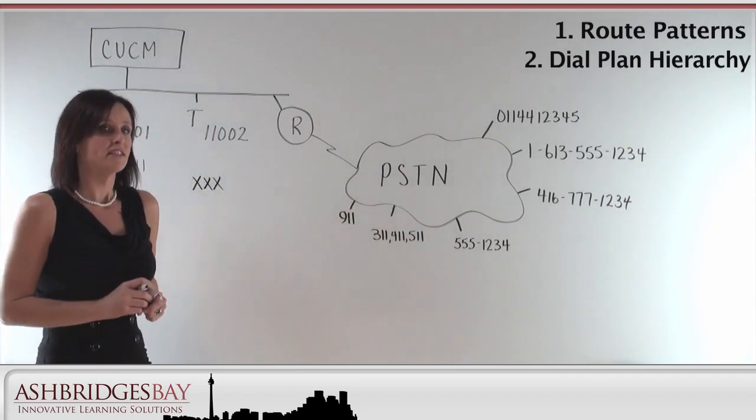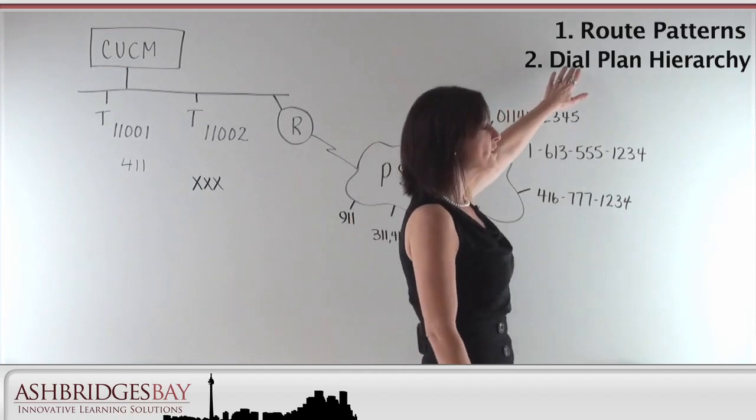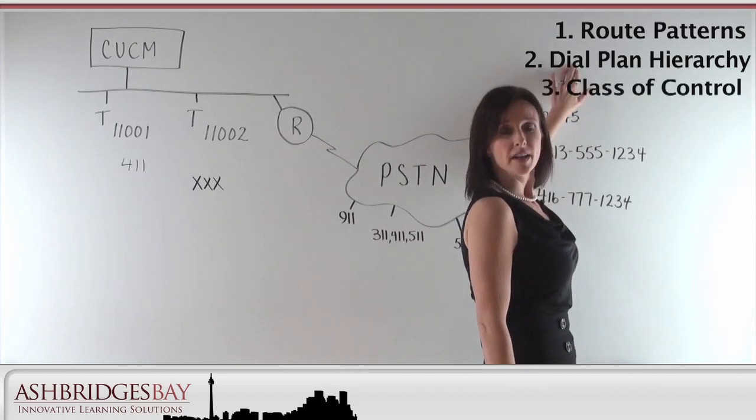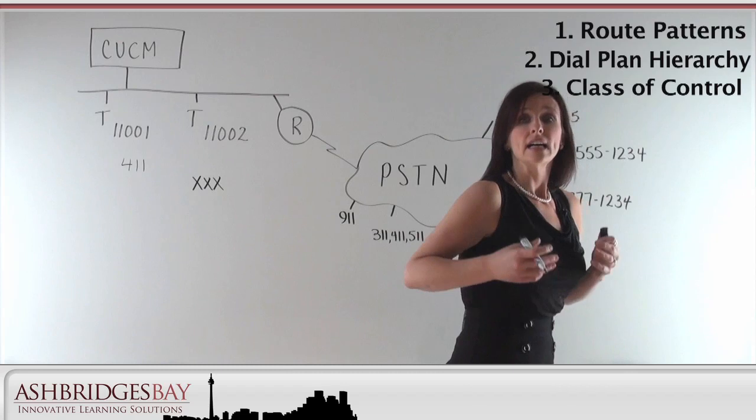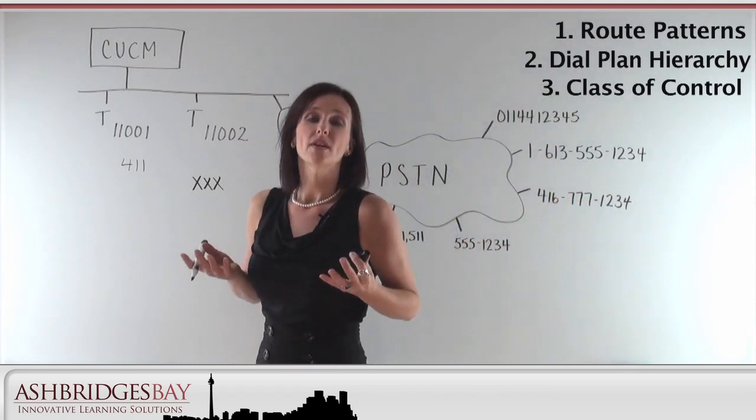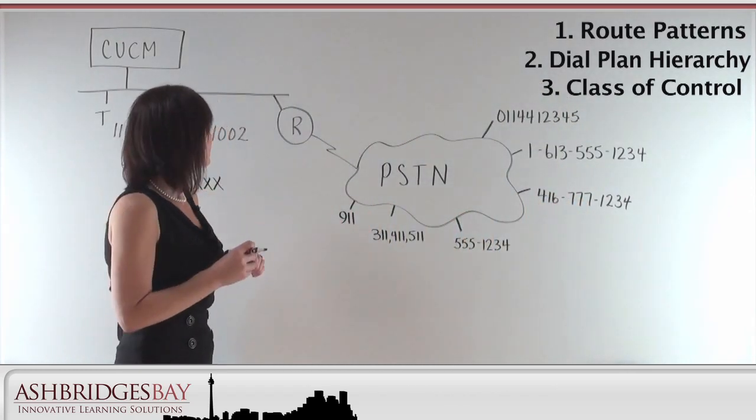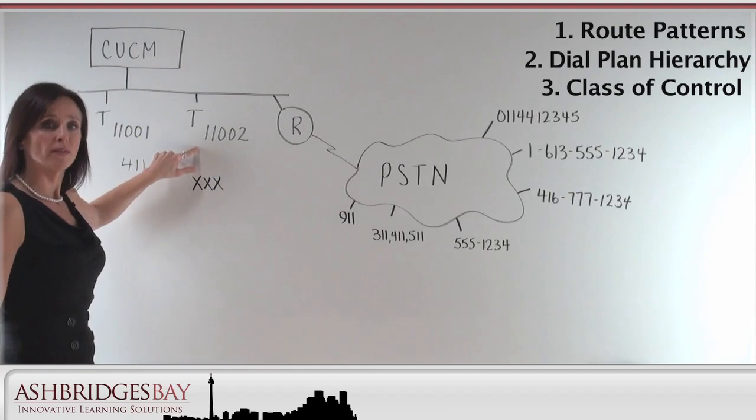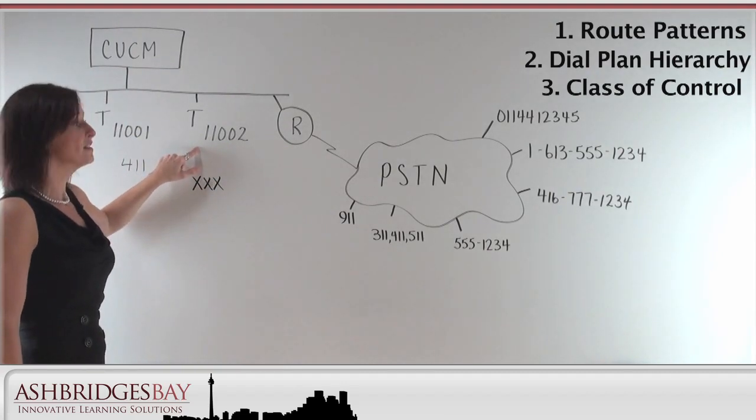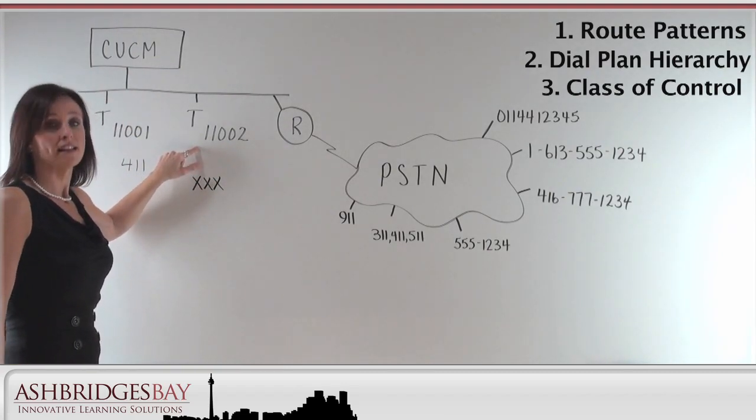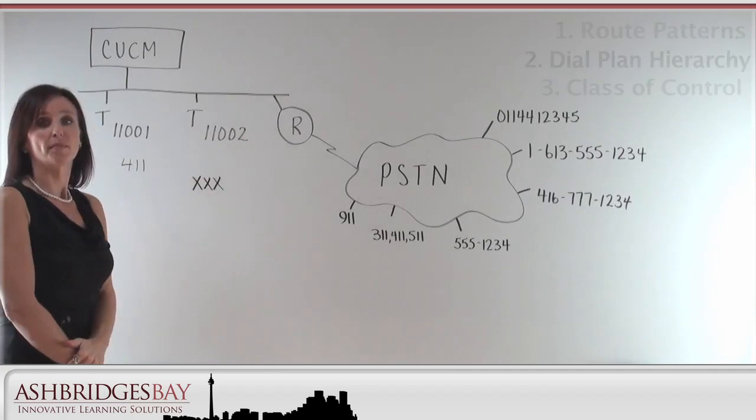The third thing you need to understand is class of service, which in the Cisco environment is referred to as class of control. Class of control helps us control our telephones. So, for example, if this were a lobby phone, we don't want to be able to dial long distance or international calls. It's class of control that will help us do that.